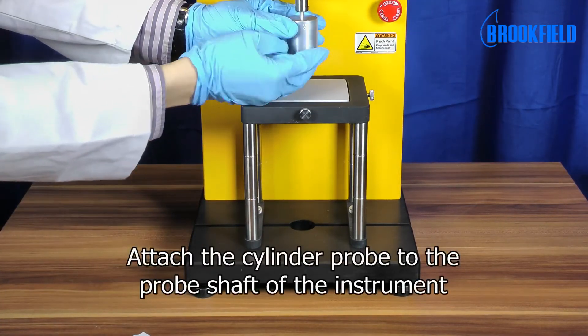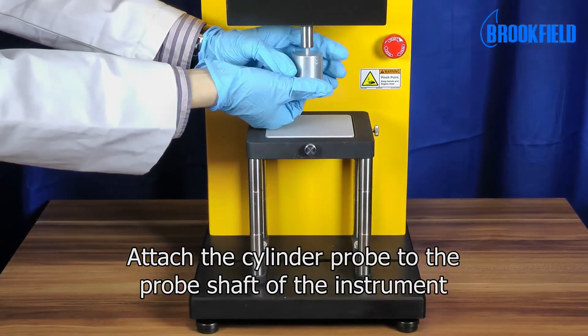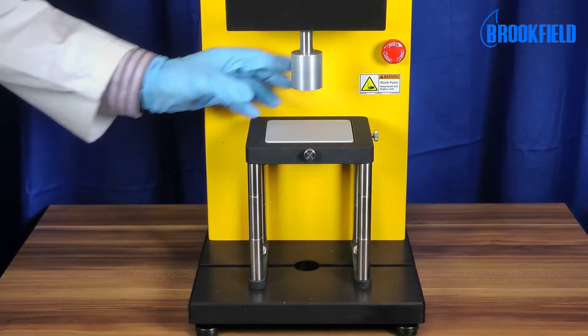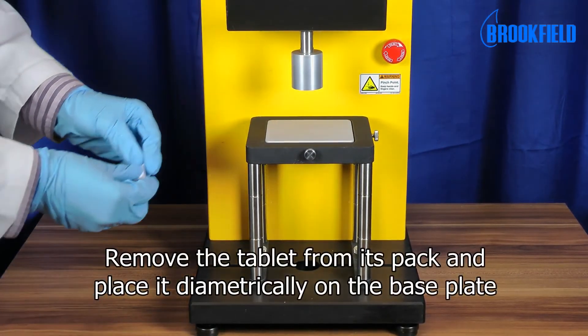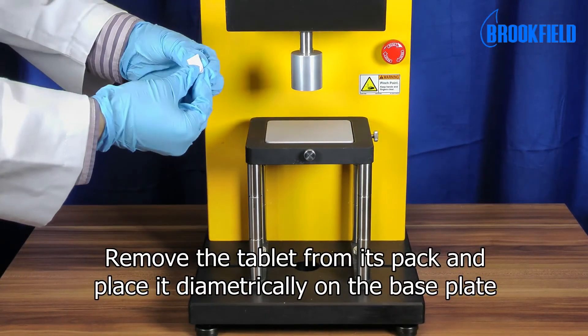Attach the cylinder probe to the probe shaft of the instrument. Remove the tablet from its pack and place it diametrically on the base plate.